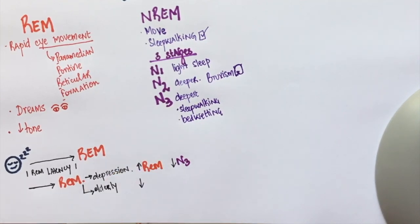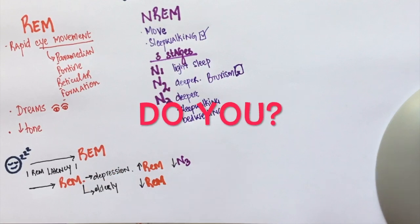N3 is also decreased in people with depression. The elderly would also experience low REM latency. However, their total REM sleep is also low. Do you know any other disorder which could have low REM latency?